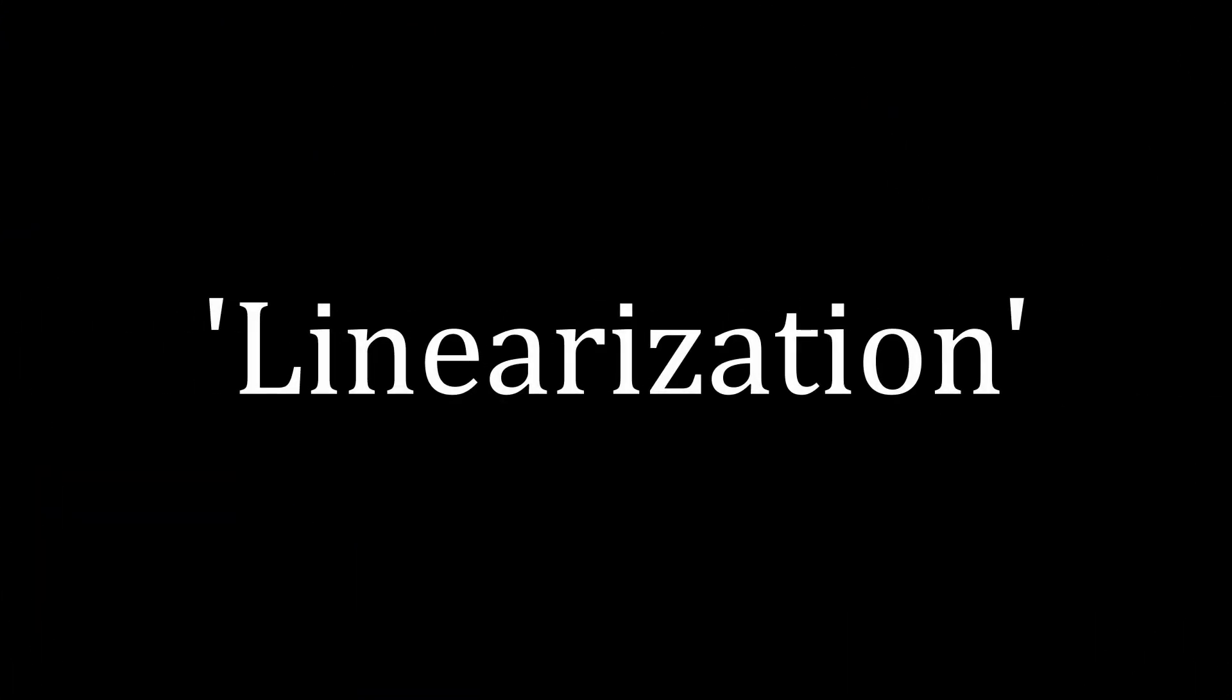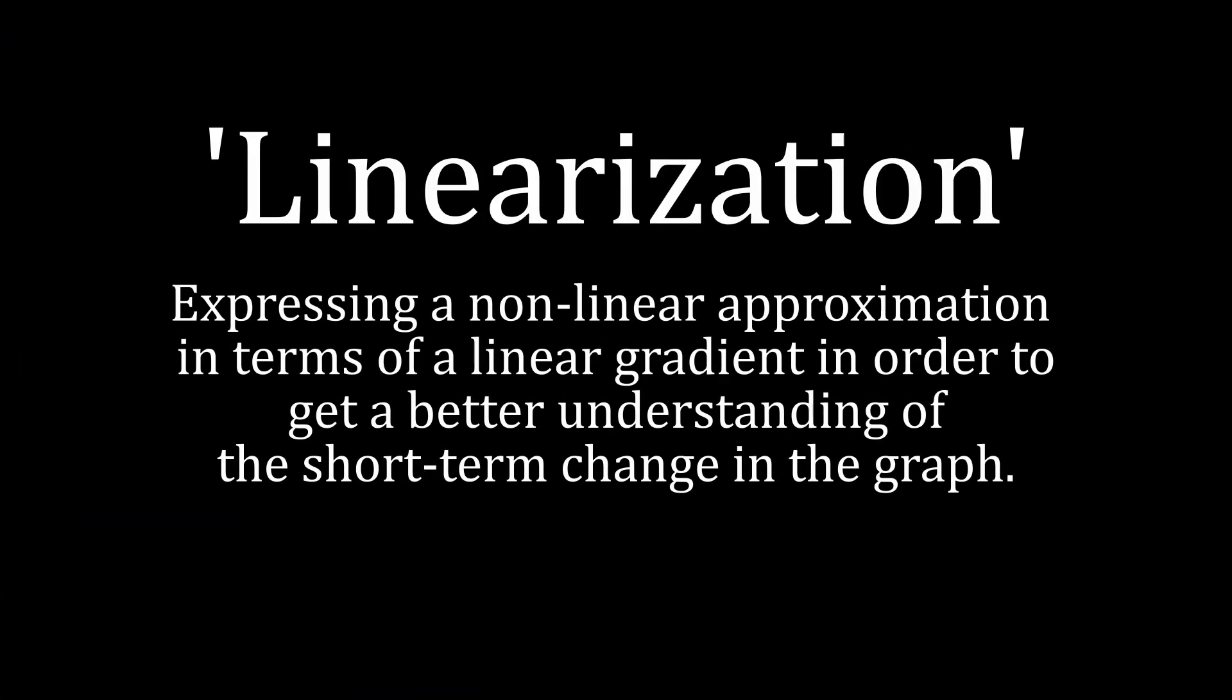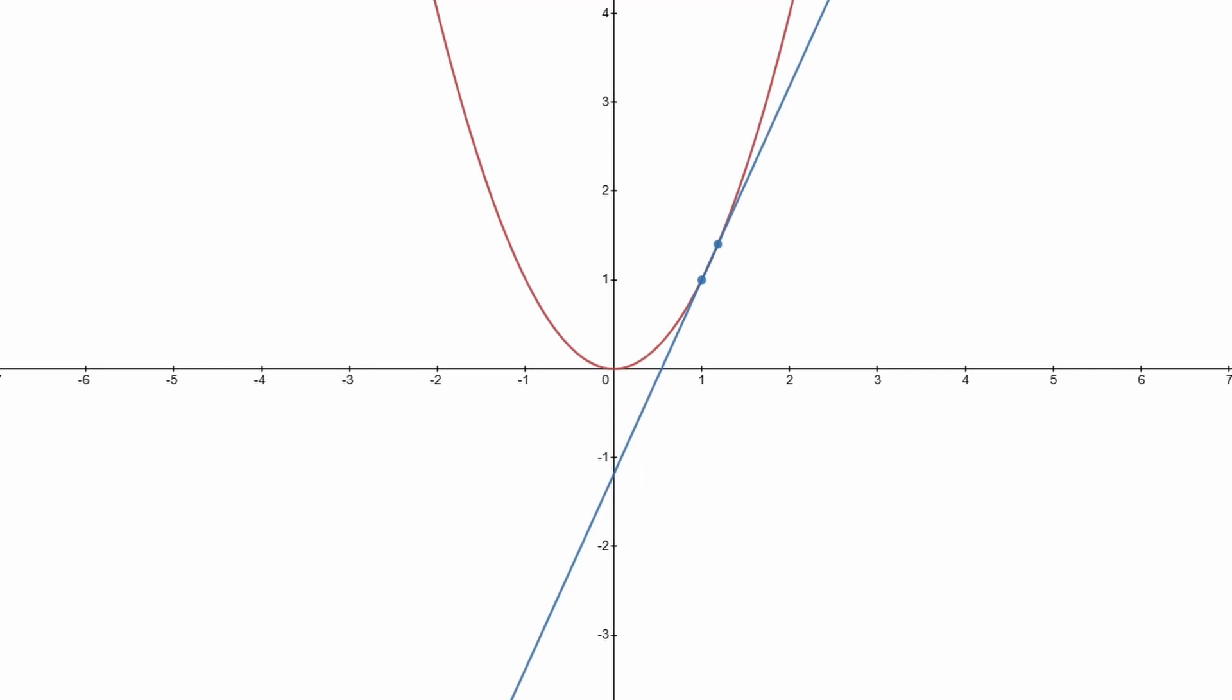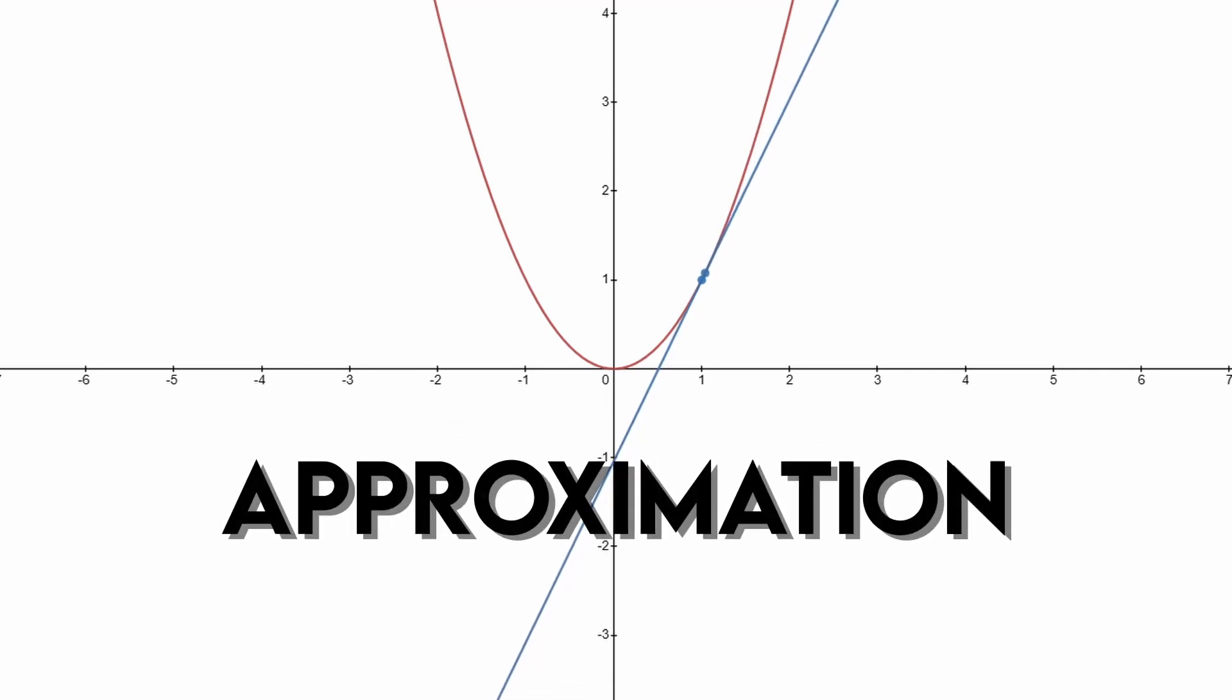This is called linearization, expressing a nonlinear approximation in the form of a linear slope. But no matter how small our delta x variable gets, it's still an approximation.